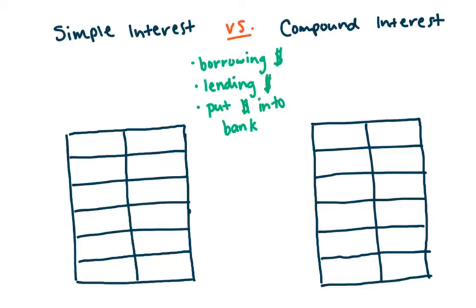So like if you're borrowing money, you're going to lose money by having to pay interest. If you're lending someone money, you would earn money by making them pay interest. And if you're putting money into a bank, you would also earn money by giving your business to the bank and they would give you a small percentage back on what you have.